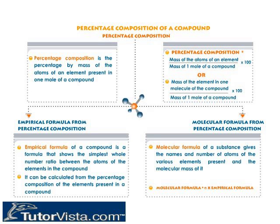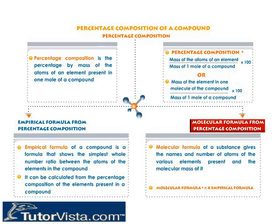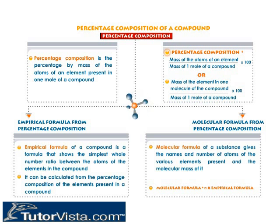Percentage composition: Molecular formulae and empirical formulae can be calculated from the percentage composition. Percentage composition is the percentage by mass of the atoms of an element present in one mole of a compound. It is calculated as: percentage composition = (mass of the atom or atoms of the element ÷ mass of one mole of compound) × 100, or equivalently, (mass of the element in one molecule ÷ molecular mass of the compound) × 100.